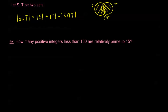For example: how many positive integers less than 100 are relatively prime to 15? One way to do this is to go through every integer from 1 through 99 and ask whether it's relatively prime to 15. That's a pretty tedious way to solve the problem — possible, but tedious. Instead, let's use the tools we have to simplify this quite a bit.